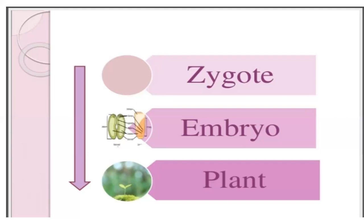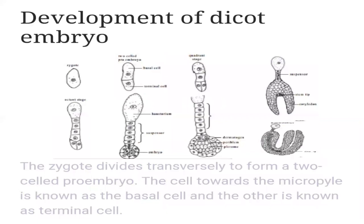After fertilization, the fertilized egg is a zygote, which develops into an embryo and eventually looks like a plant. In the development of the dicot embryo, the zygote converts into a two-celled pro-embryo with a basal cell and a terminal cell. Then into a four-celled quadrant stage, then the eight-celled octant stage. Some middle cells form the suspensor, and the lower eight cells form the embryo, while the upper side forms the haustorium.